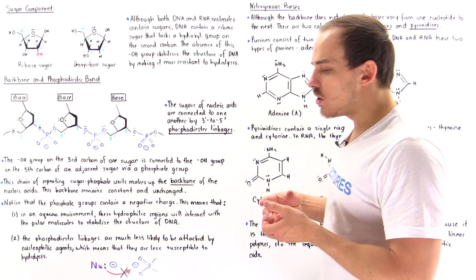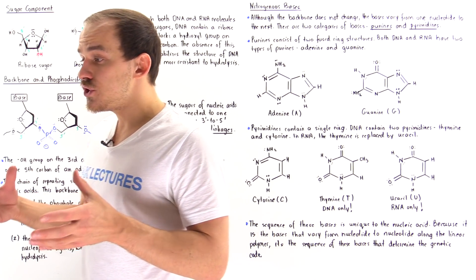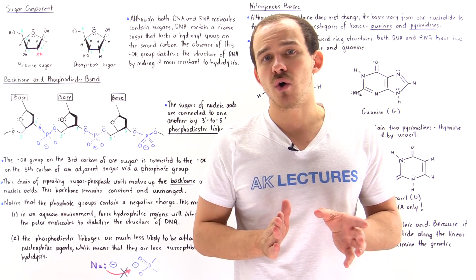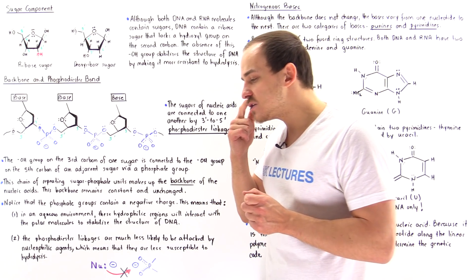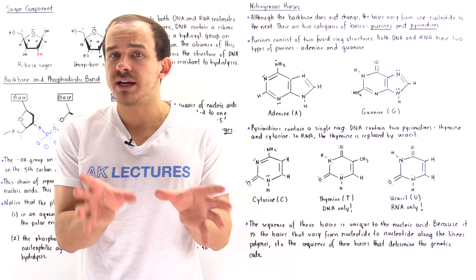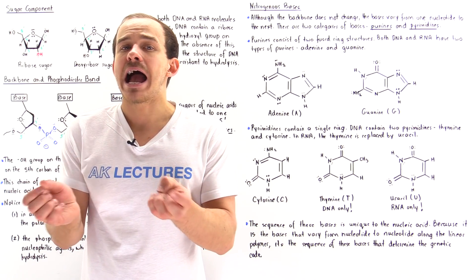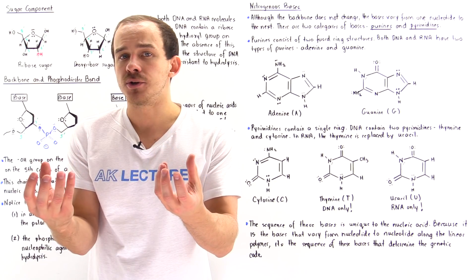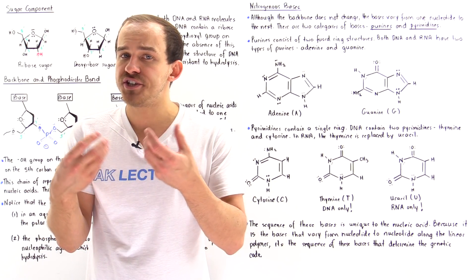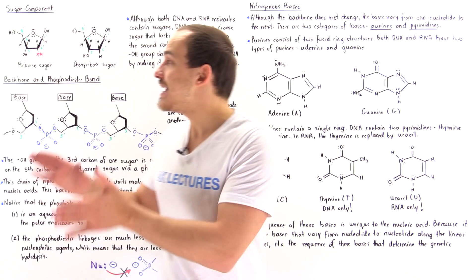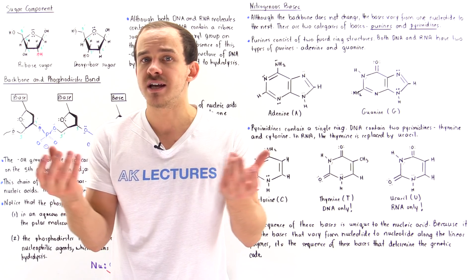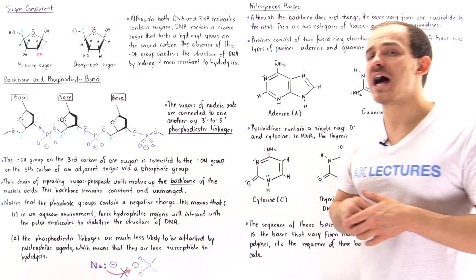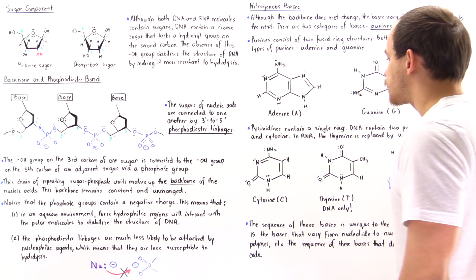Now let's move on to something called the backbone. A certain part of the nucleic acid is known as the backbone. Before we discuss what the backbone is, let's discuss how the different nucleotides are linked together in our polymer. Just like in proteins we have monomers known as amino acids linked together by peptide bonds, in nucleic acids we have nucleotides linked together by special bonds known as 3' to 5' phosphodiester bonds, or phosphodiester linkages.